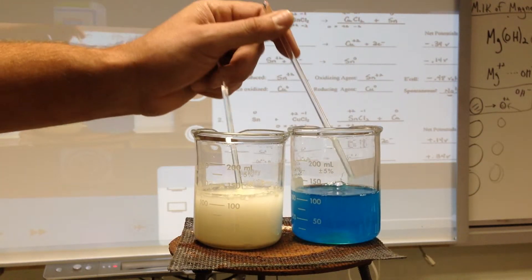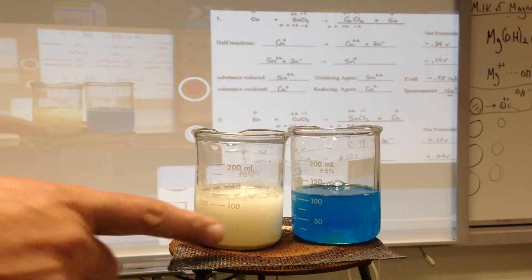Now, I've got these two solutions. You have copper plus two in this beaker and tin plus two in this beaker. What we're going to do is put some metals in there.